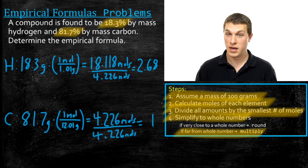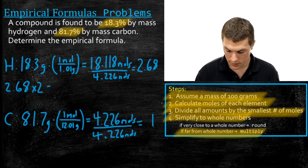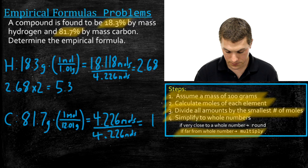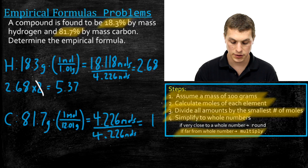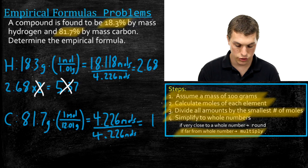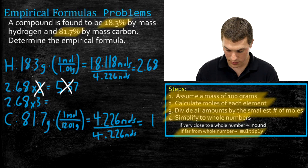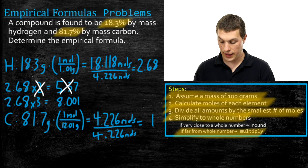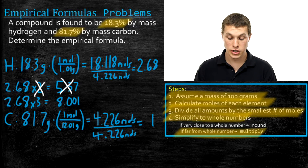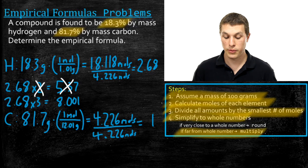Starting at 2: 2.68 times 2 gives 5.37 — that's not close to a whole number, so 2 is wrong. Let's try 3: 2.68 times 3 gives 8.001, which is essentially 8. That's a whole number, so we've found the right multiplier.